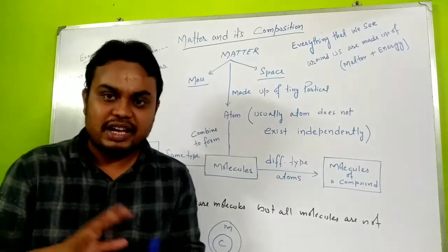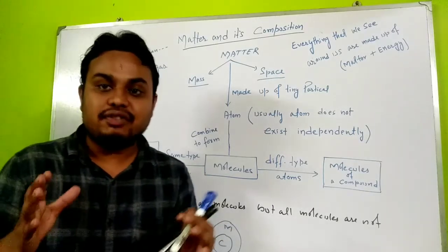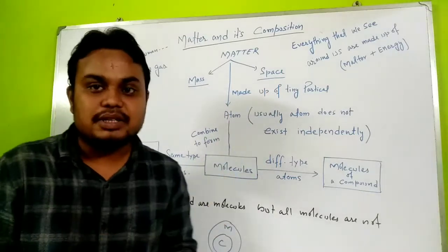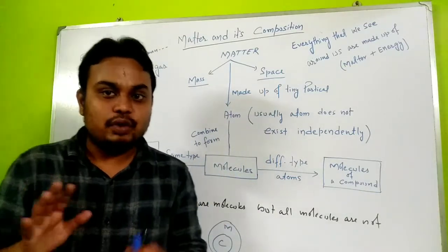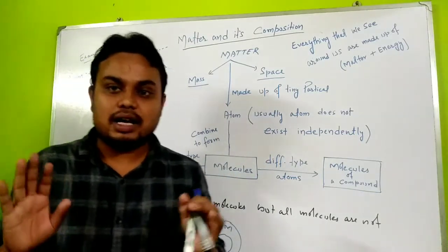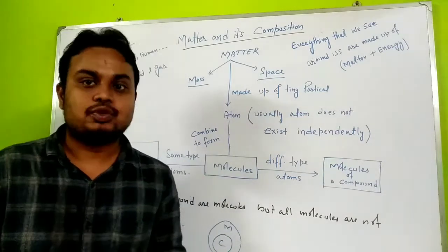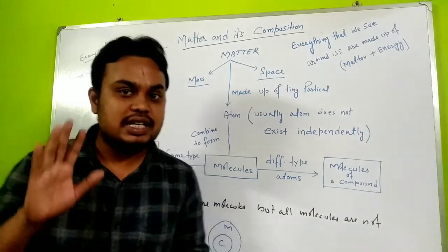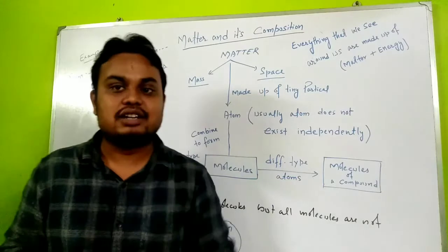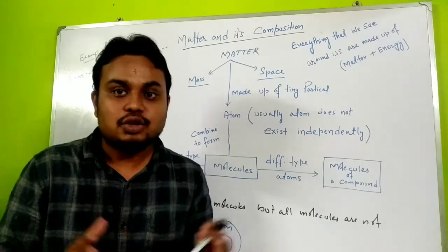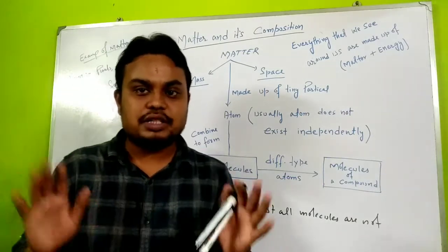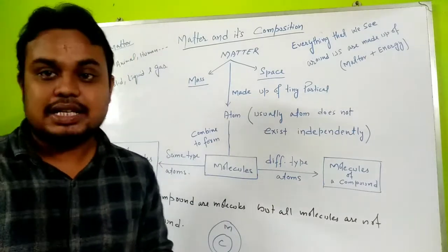So everything we see, if it has mass and occupies space, is matter. One question: is everything in the world matter? The answer is no. There are things that are not matter, like light. It is not matter because it has no mass and occupies no space. Current and electricity are also not matter.